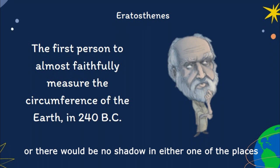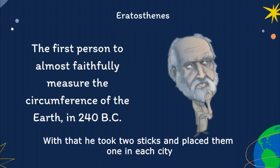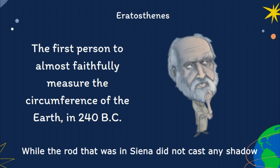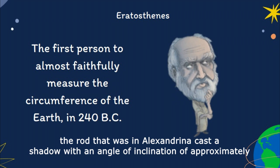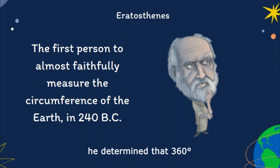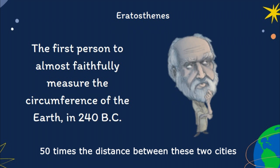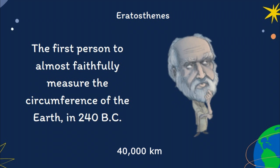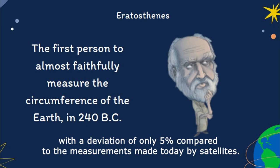With that, he took two sticks and placed them in each city and watched them during the day. While the rod in Syene did not cast any shadow, the rod in Alexandria cast a shadow with an angle of inclination of approximately 7 degrees. Using the distance between the two cities — 800 kilometers — as a basis, he determined that 360 degrees would be approximately 50 times that distance, and thus concluded that the circumference of the Earth would be approximately 40,000 kilometers, with a deviation of only 5% compared to measurements made today by satellites.